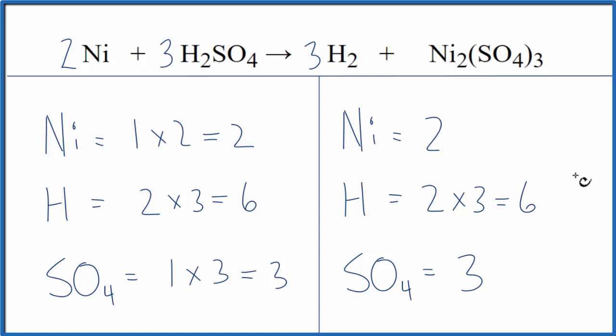And now this equation is balanced. So this trick of counting polyatomic ions as one item, as long as you have them on both sides, really makes balancing a lot easier. Either way, you get the same answer. This is Dr. B, and thanks for watching.